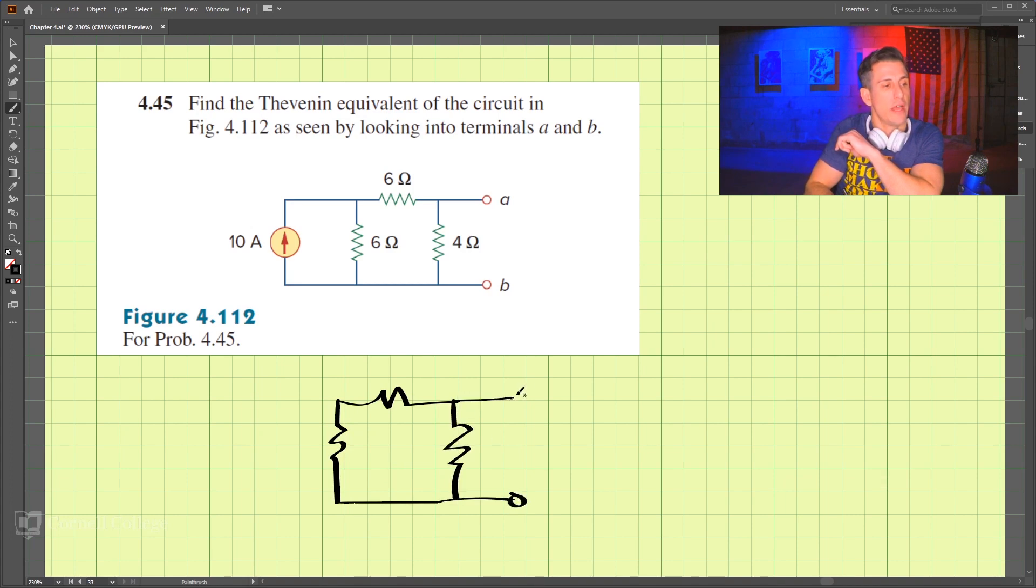We have A and B, and we're looking for the Thevenin resistance between these two. We have 4, 6, and 6 here.